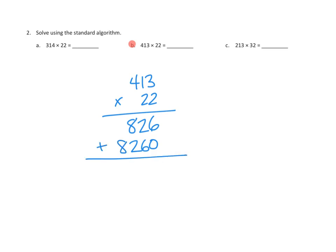Now we need to add up our partial products. Let's go ahead and add those up. We add up our 6 and our 0 in our 1s column, and we get 6. We add up our 10s column, that's 2 plus 6 is 8.